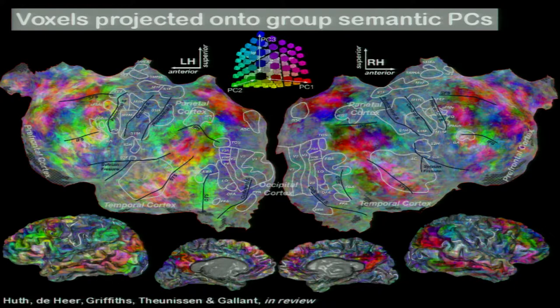The more interesting question is what happens when we project voxels into this principal component space. We take the first three principal components and assign them to the red, green, and blue channels of the monitor, giving each voxel a color based on its projection. Plotting these on flat maps, the maps are very rich — here's primary auditory cortex, the temporal parietal junction, the precuneus. There's a strip of complicated semantically selective voxels with a rich pattern, and prefrontal cortex shows little domains of pink interleaved with green — possibly a repeating pattern.